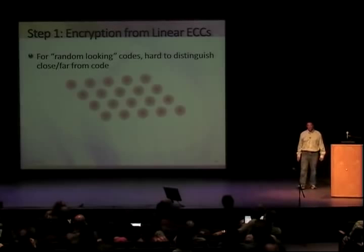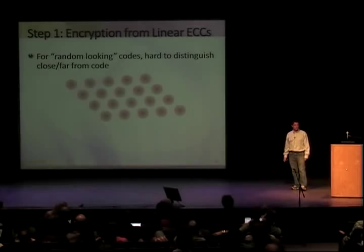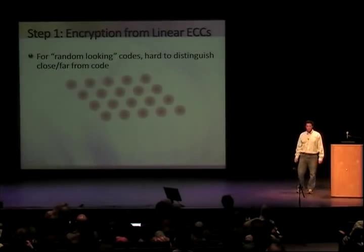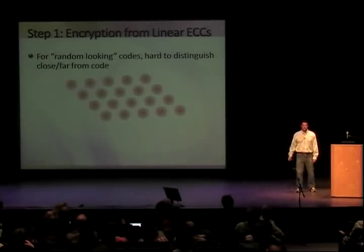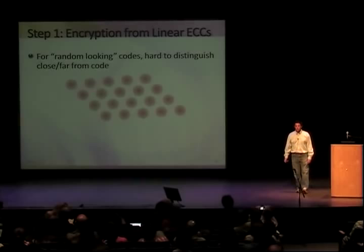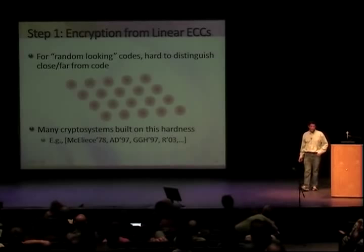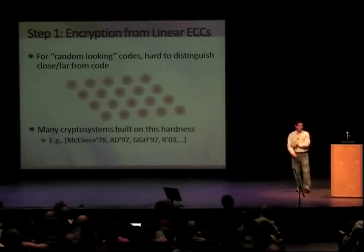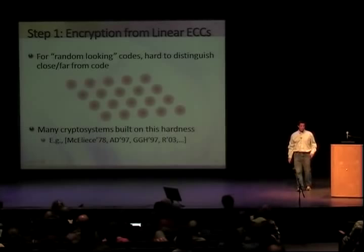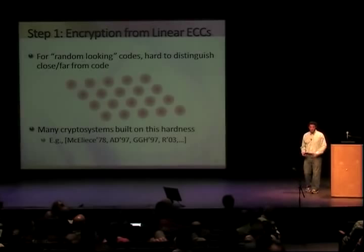Encryption from linear error-correcting codes. The underlying assumption is that for random-looking codes, it's very hard to distinguish points that are close to the code from points that are far away from the code. In this two-dimensional picture, the codewords are the red dots in the middle, and it's easy to distinguish close from far. But if you add 500 more dimensions, it becomes hard. We already have many cryptosystems built around this hardness — the McEliece cryptosystem from 1978, and lattice-based systems like the Ajtai-Dwork, GGH, Regev cryptosystems, and many others.